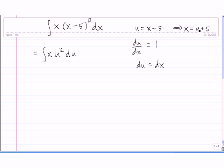So solving for x, we get x equals u plus 5. Now we take this u plus 5 and substitute it in for this x. So we get u plus 5 times u to the 12th times du.